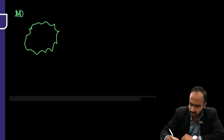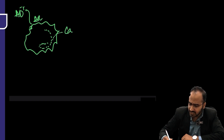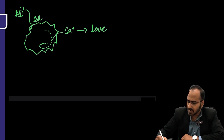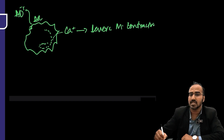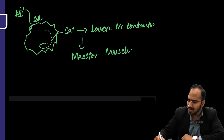If suxamethonium is given to an autosomal dominant patient, it goes towards the abnormal ryanodine receptor and stimulates it. As this receptor is stimulated, it releases calcium, and that calcium causes severe muscle contractions. These contractions start with the masseter muscle, and then the whole body gets involved.